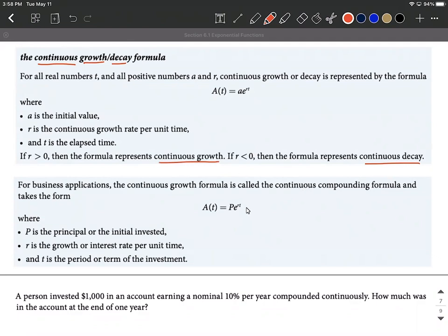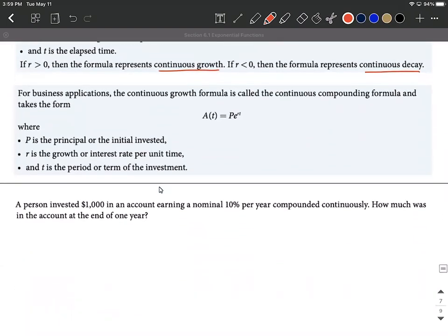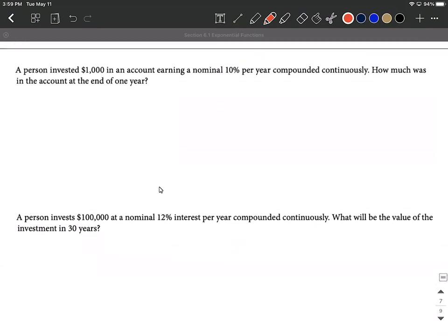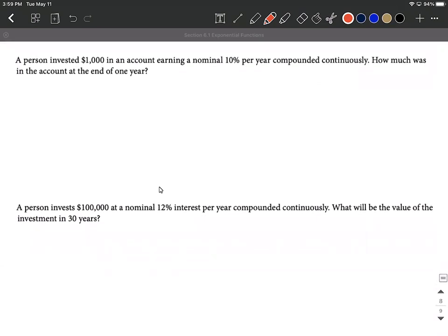So either decay, continuous decay, or continuous growth. We're going to be referring back to the same formula and you can use either one of these versions. Basically, everything means the same thing. Just be careful. Decay, rate's negative. Growth, rate's positive. And then T is our time in both cases. Alright, so let's jump into a couple of these problems and see how we fill in.